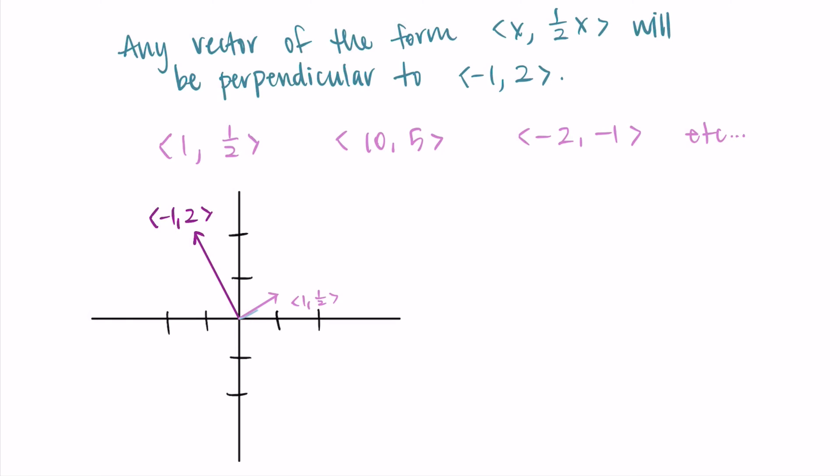Then I can do 10, 5. So this actually points in the same direction, it just has a longer magnitude. Or I could do the negative valued 1. So I have negative 2, negative 1. This points in the opposite direction, but it's still orthogonal to our vector, negative 1, 2.